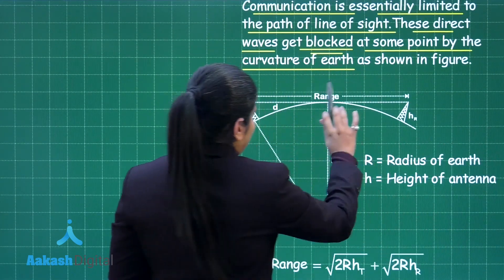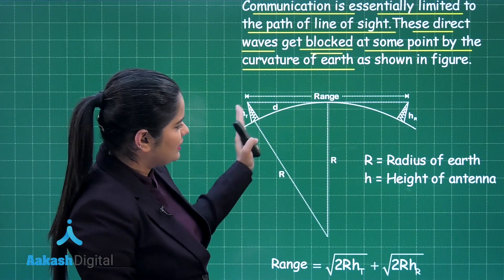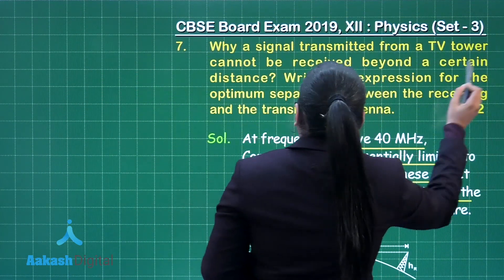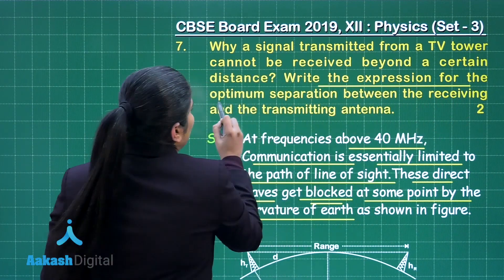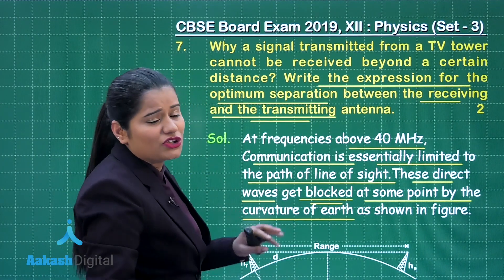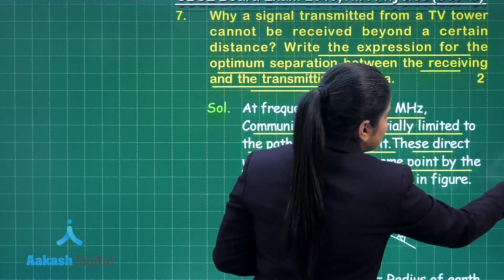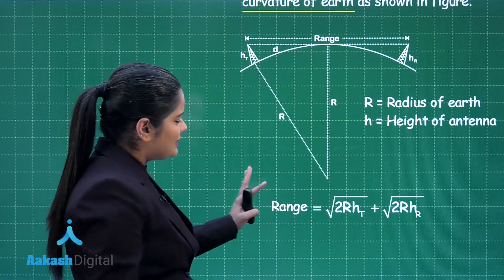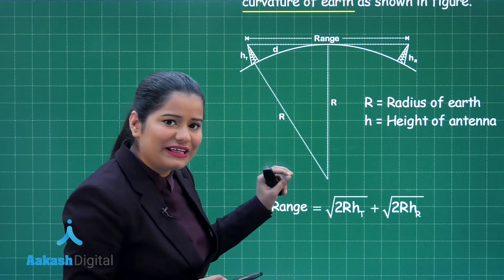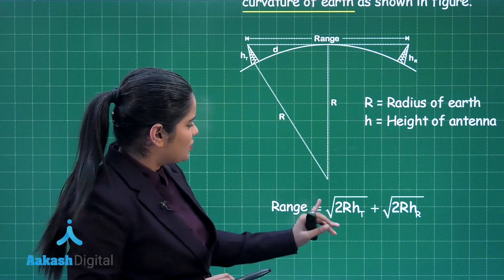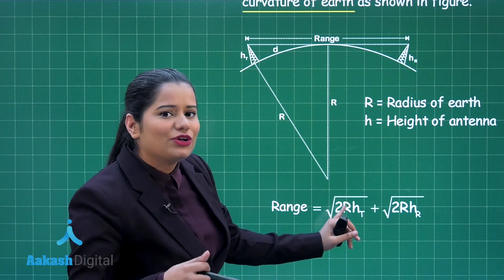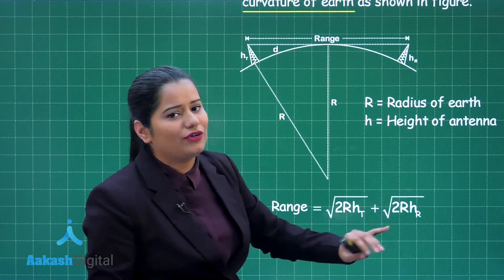From this figure you can see how this effect works. In the second part of the question, you are asked to write the expression for the optimum separation between the receiving and the transmitting antenna. There is no need to derive it — you just write down the expression for the range of the optimum distance between the transmitting and receiving antenna. In this expression, r is the radius of the Earth, ht is the height of the transmitting antenna, and hr is the height of the receiving antenna.